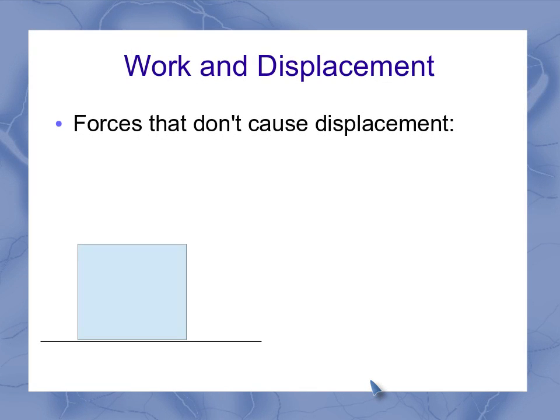Sometimes we have forces that don't cause any displacement at all. So if my box is just sitting there, well, I'd have a force of gravity downwards and a normal force upwards. But neither one of those forces is causing any kind of displacement on the box. That means that no energy is transferred.